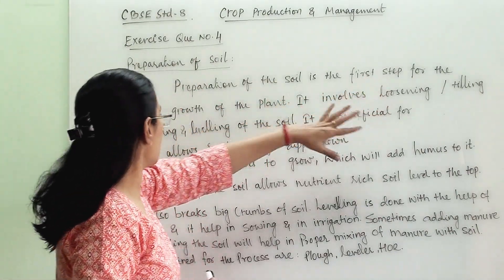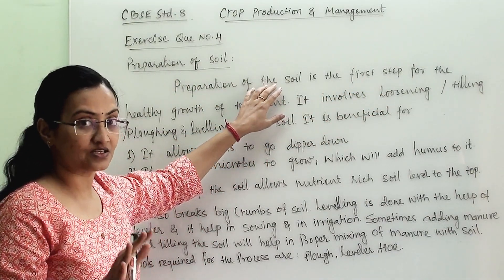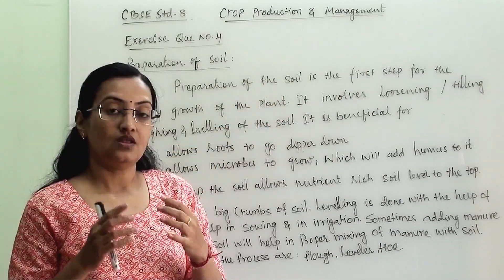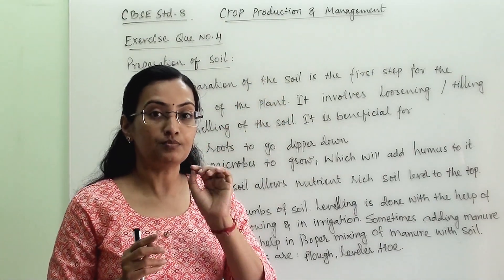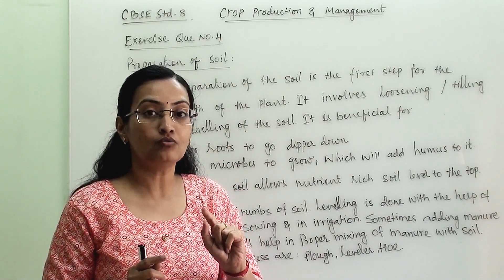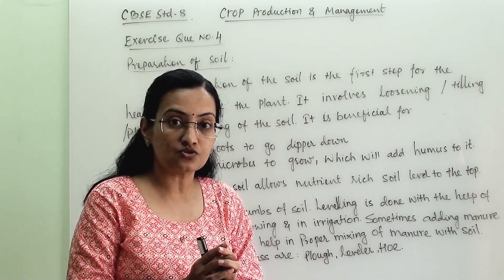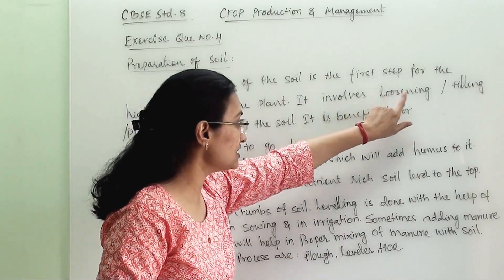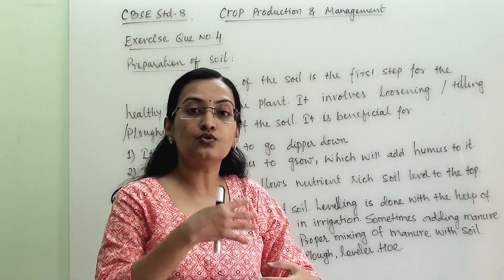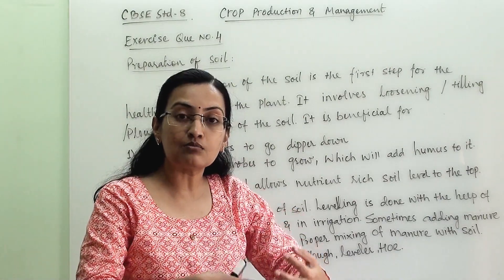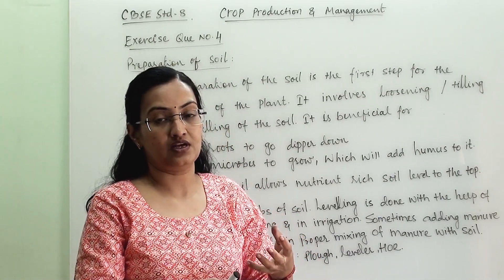Preparation of the soil is the first step for the healthy growth of plants, and it is a very essential and important step. Preparation of the soil involves loosening of the soil, also called tilling or plowing. In this process, we are mixing the top layer of the soil with the second layer beneath it.